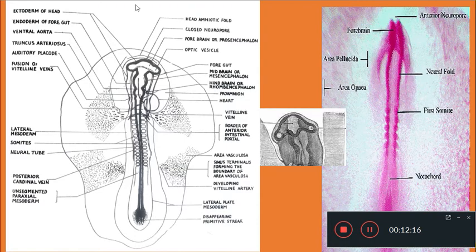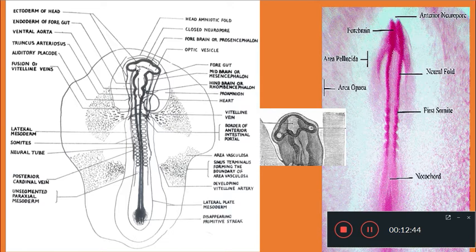The next significant change is the development of a pair of optic vesicles. These are paired evaginations arising from the lateral walls of the prosencephalon. They are called the primary optic vesicles, and the lumen of each optic vesicle is continuous with the lumen of the prosencephalon.